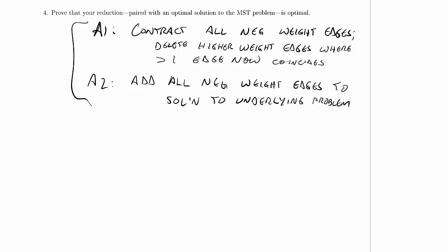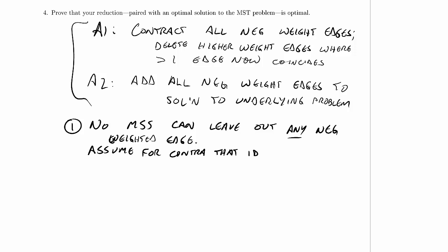I'm going to take that in two steps. Part one, I'm going to point out that no minimum spanning subgraph can leave out any negative weighted edge. How do I know that? Well, assume for contradiction that it does.